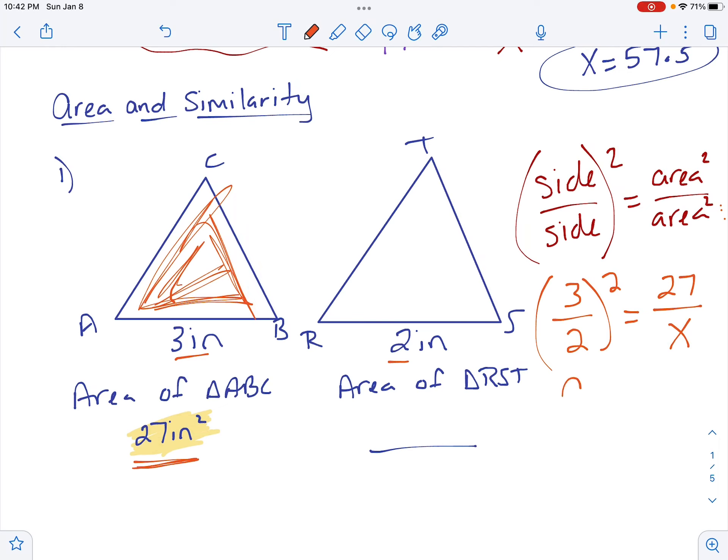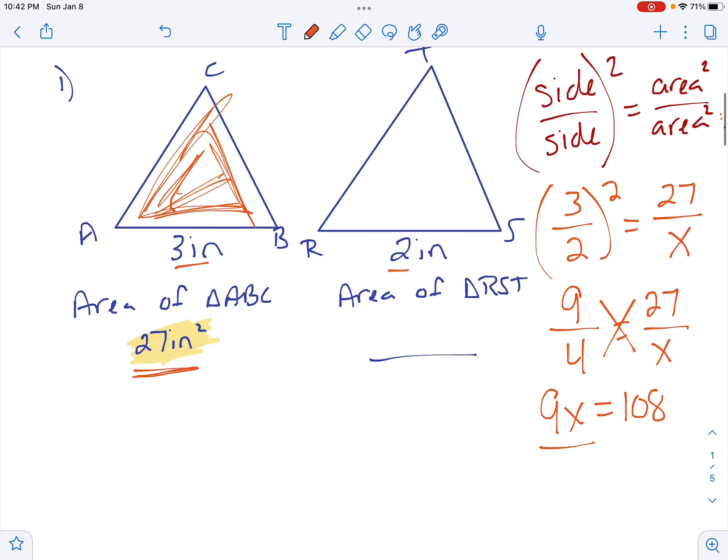Remember, when you square a fraction, you're going to square top and bottom, so 3 squared is 9, 2 squared is 4, equals 27 over X. At this point, you can go ahead and cross multiply. So I'm going to go this way first, so 9 times X would be 9X. Now I'm going to go the other way. So we have 4 times 27, which is 108. I'm going to divide each side by 9 to get X equals 12, which means the perimeter of the second one is 12 inches squared. Anytime you're dealing with area, don't forget to square your scale factor.